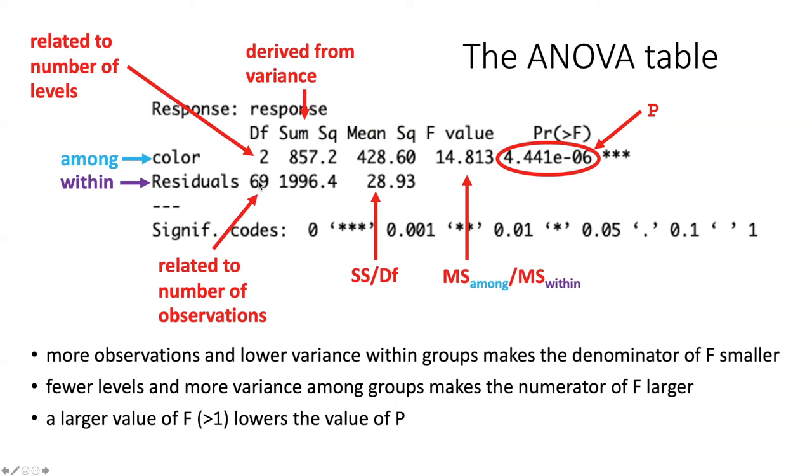Degrees of freedom is related to the size of these two sources of variance. The number of degrees of freedom for the colors is one less than the number of colors. So if there's three colors, the degrees of freedom will be two. The degrees of freedom for the within variance is the total number of measurements that we made minus one. So both of these numbers are related to the size of the experiment.